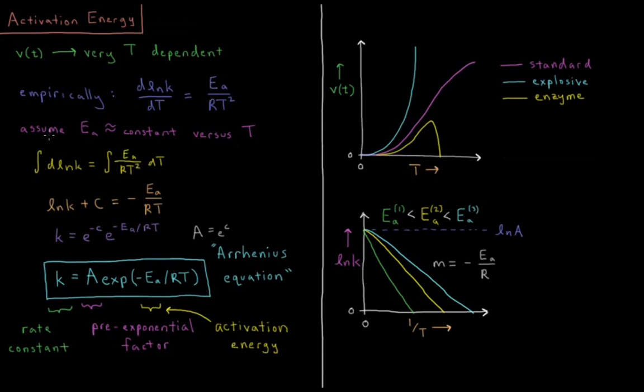What we're going to assume is that this activation energy is fairly constant versus temperature. So if we multiply both sides by dT, then we have the rate constant dependence over here and the temperature dependence over here. Integrating both sides, if we do an indefinite integral, we have the natural log of the rate constant plus some constant C equals minus the activation energy divided by gas constant times temperature.